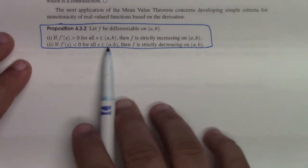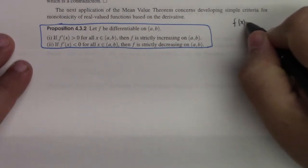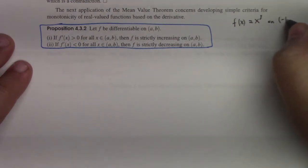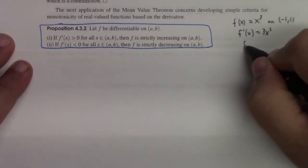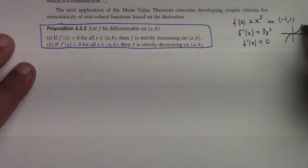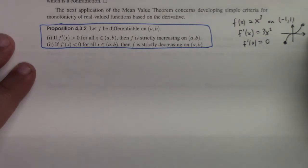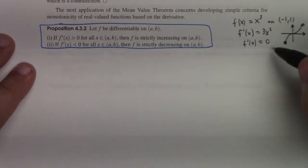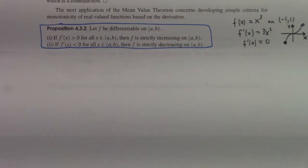The converse of this isn't quite true. For example, consider f(x) = x³ on (−1, 1). Notice that f′(x) = 3x², and f′(0) = 0. Yet the cubic from −1 to 1 is strictly increasing, and there's a place where the derivative is 0. So the converse to this proposition is not true, at least not without adding some further conditions.